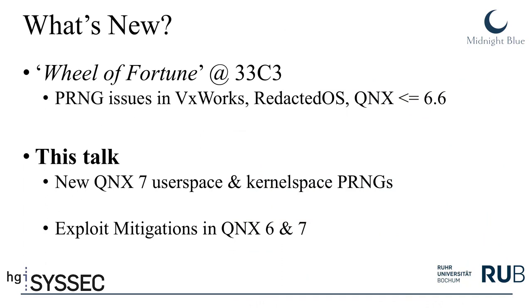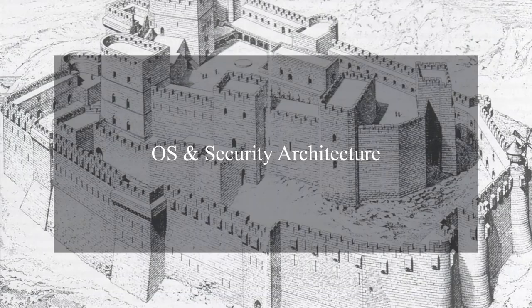Last year we gave a talk called 'Wheel of Fortune' which covered PRNG issues in VxWorks, a redacted OS which we can't name for NDA reasons, and QNX versions up to and including 6.6. In this talk, we'll discuss the new user space and kernel space PRNGs of QNX 7, and focus on the exploit mitigations of QNX 6 and 7, which haven't been discussed before. With that, I hand the introduction to the OS and security architecture to Ali.